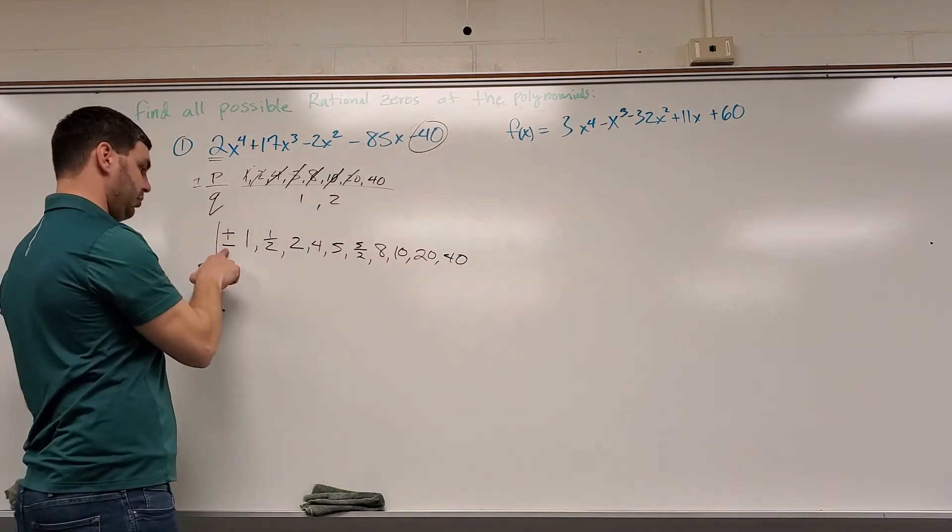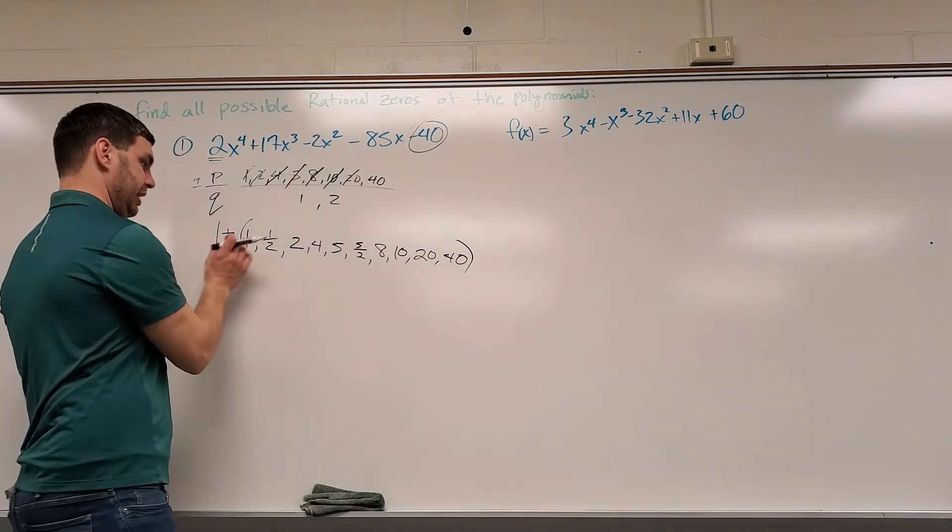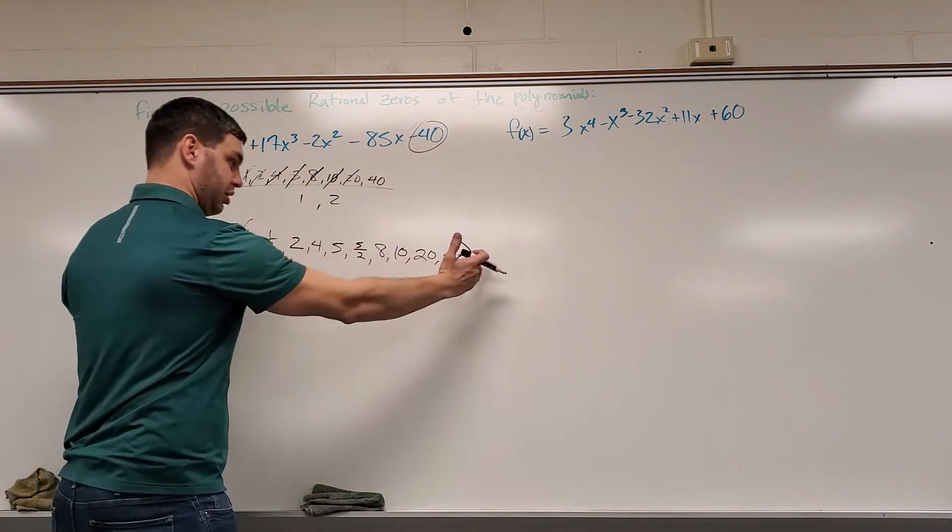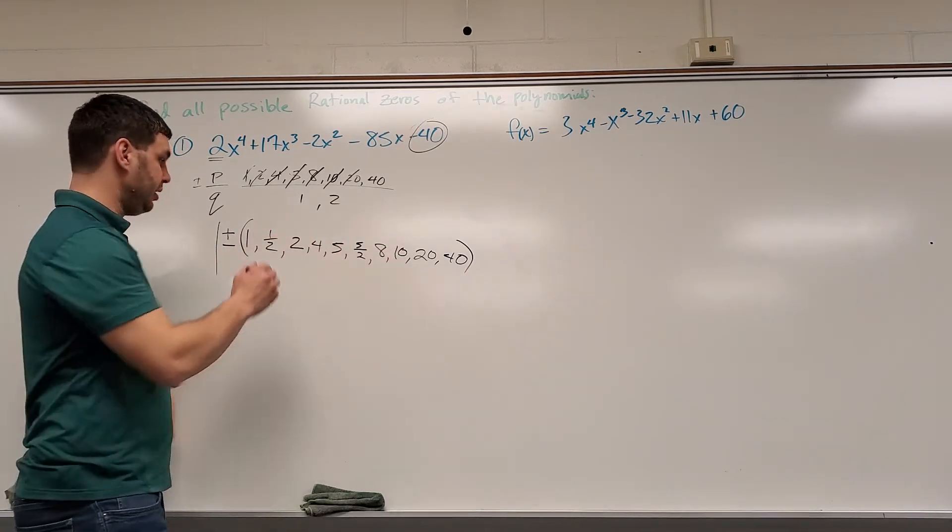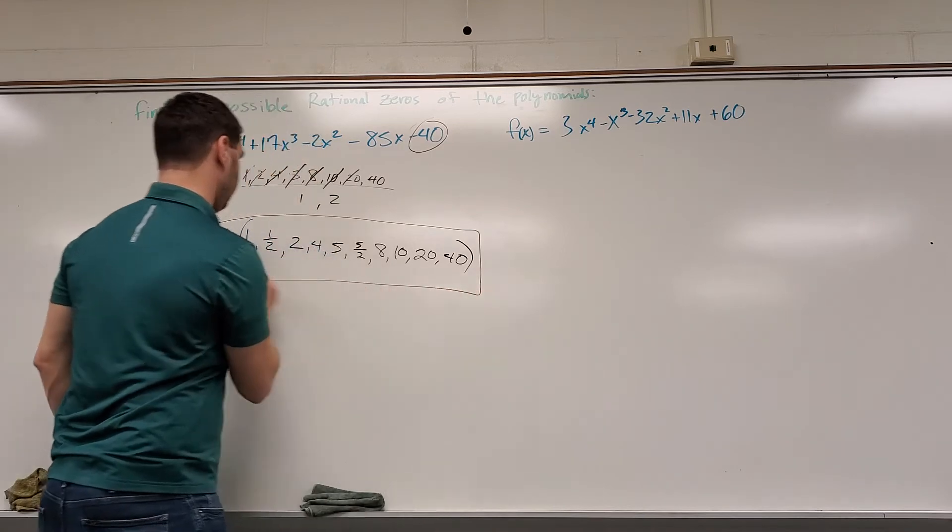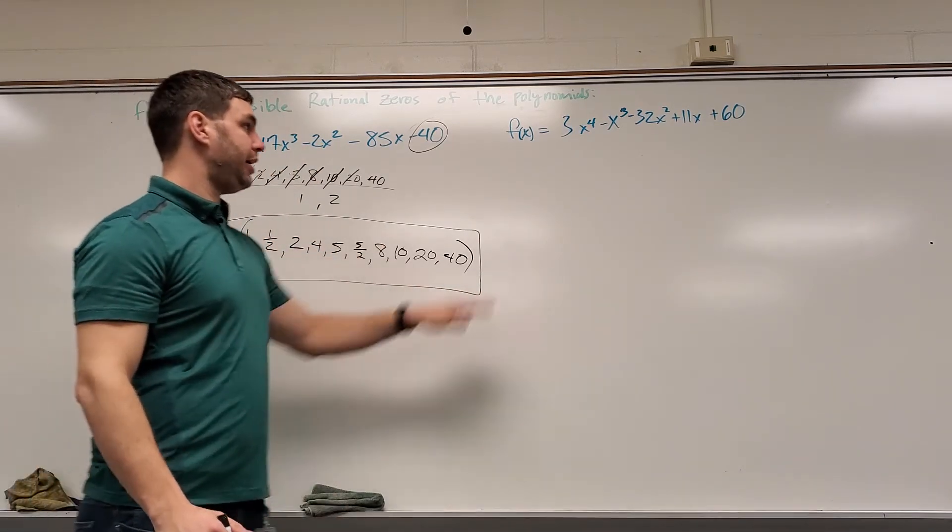So all the possibilities are plus or minus, put those maybe in parentheses, so we apply that plus or minus to all of that. So it doubles our list. It's 1 plus or minus 1, plus or minus 1 half, plus or minus 2, and so on. Put it in parentheses like that to say that plus or minus applies to everything.